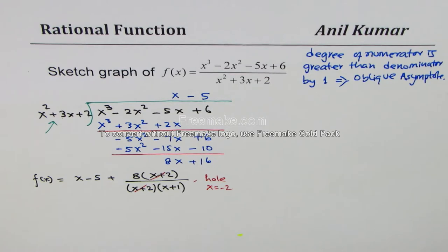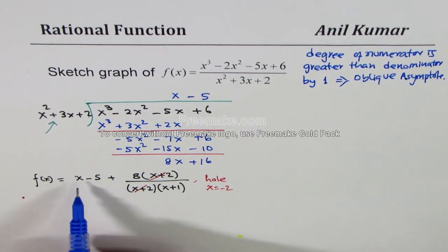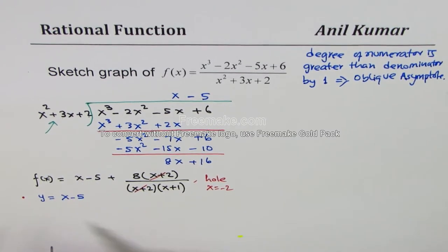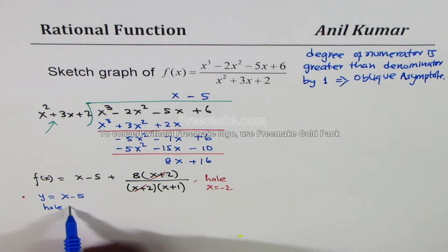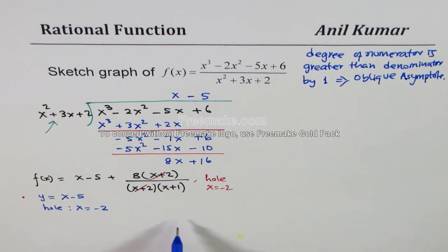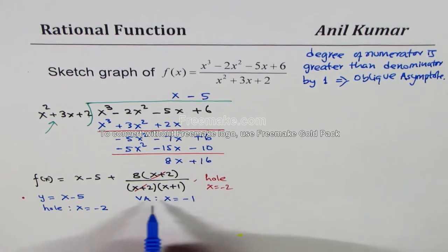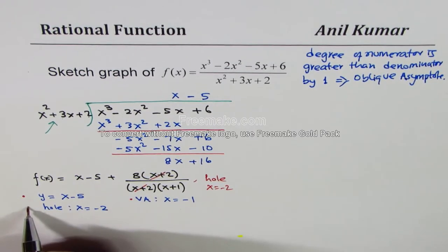This equation gives us almost everything. We get three things: first, the oblique asymptote y = x - 5; second, a hole at x = -2; and third, a vertical asymptote at x = -1. That's the beauty of this equation — it really helps us find all three features at once.